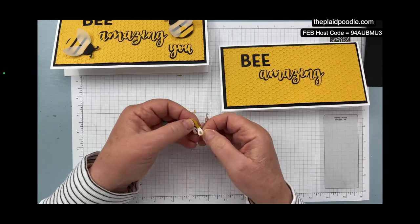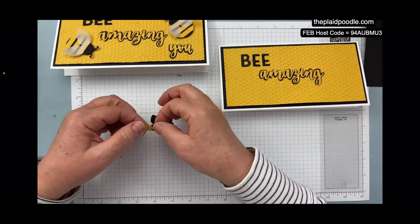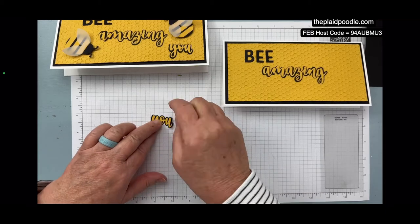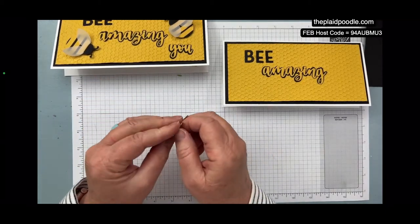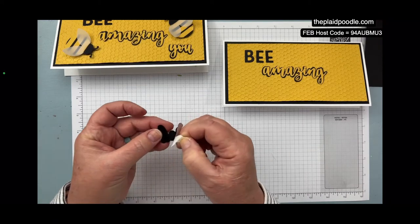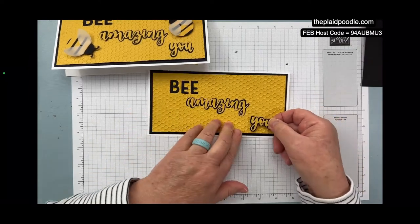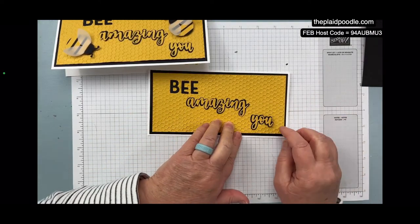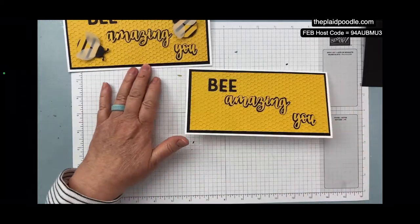And once again, I have that adhesive sheet, so I'm going to just peel the backing off, the paper backing. And I've got it on this one too. So I'm going to put that right down here. There we go! Now we're going to fill in with our little bees.